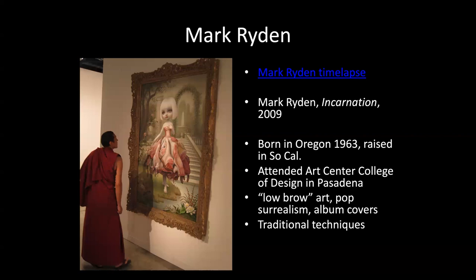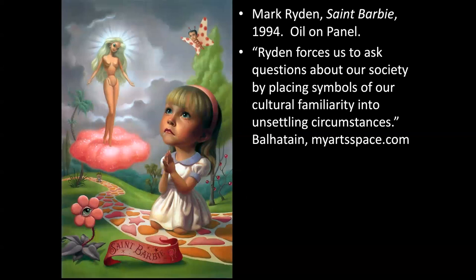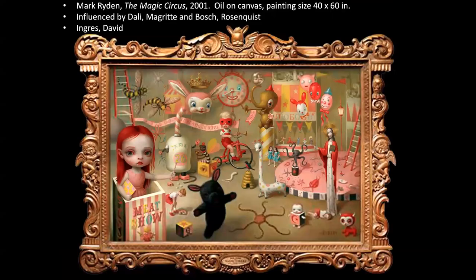He uses traditional techniques — you'll see him build up layers and layers of thin paint to make these figures, which are surreal but painted in such a way that you almost could think they were real. This one is St. Barbie. Pop surrealists in general tend to look at things in our society, kind of like what we saw with the pop artists, and think about the implications. By using surrealism — a different world that's close to ours but doesn't seem like it could exist — you can explore these ideas more clearly. Ryden forces us to ask questions about our society by placing symbols of cultural familiarity into unsettling circumstances.